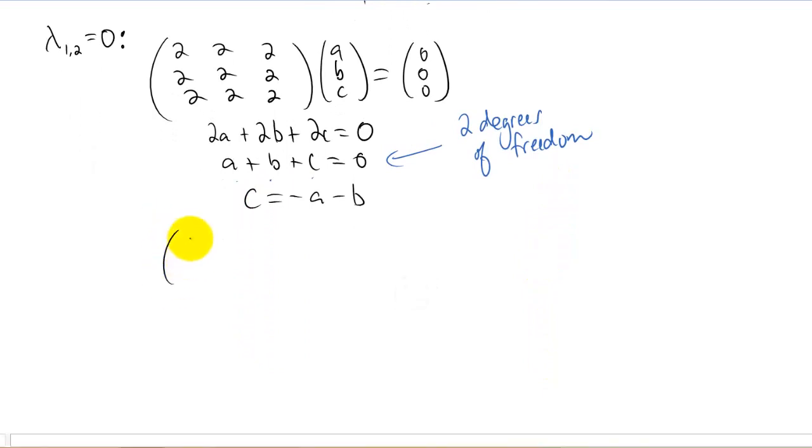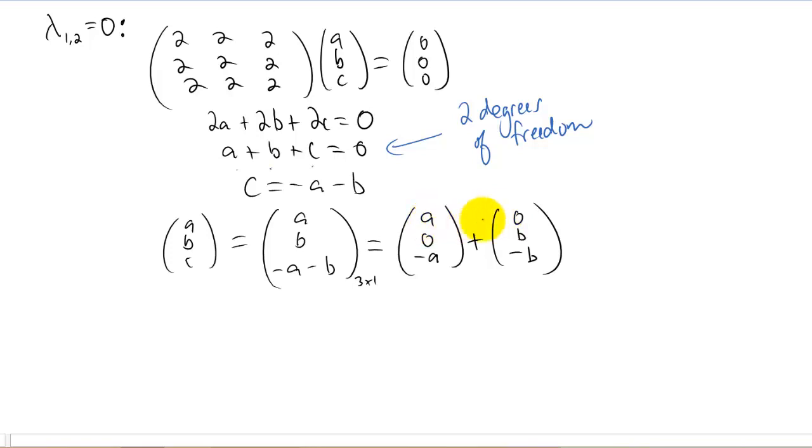So our eigenvector which is just a, b, c is going to be a and b and c is going to be negative a minus b. So we chose a to be a free variable, we chose b to be a free variable and c depends on what a and b are. The reason I wrote it out like this is because we actually want to get two eigenvectors out of this situation. If we have two degrees of freedom here we actually want to get two eigenvectors out of it. The way to make that happen is to split this up into its a parts and its b parts. That's maybe a confusing way to say it, I'll show you what I mean. We split up this three by one vector into two three by one vectors and you'll notice that if we add these two vectors together we get right back to where we started.